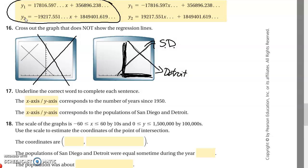Number 17, underline the correct word to complete each sentence. The x-axis corresponds to the number of years since 1950. This is the x-axis right here. This is 1950. The years are getting bigger. The y-axis corresponds with the population. So this is the population. This is the years. The years have to go on this axis. They have to be getting bigger. The population gets higher for San Diego. As the years go on, population gets smaller for Detroit.